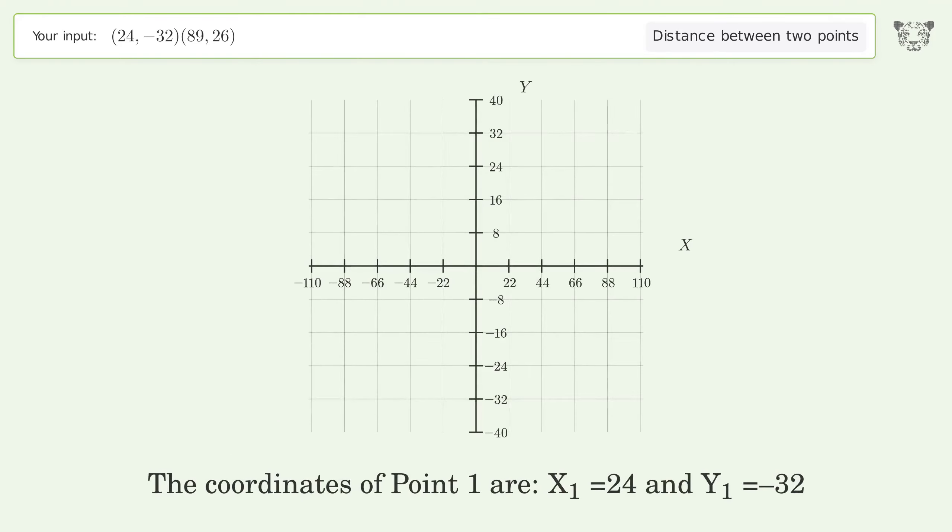The coordinates of point 1 are x1 equals 24 and y1 equals negative 32. The coordinates of point 2 are x2 equals 89 and y2 equals 26.